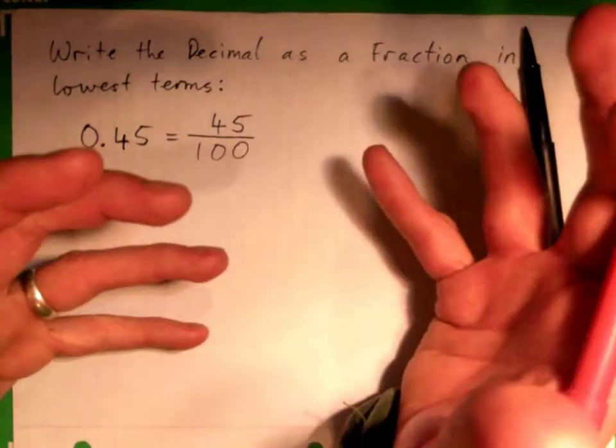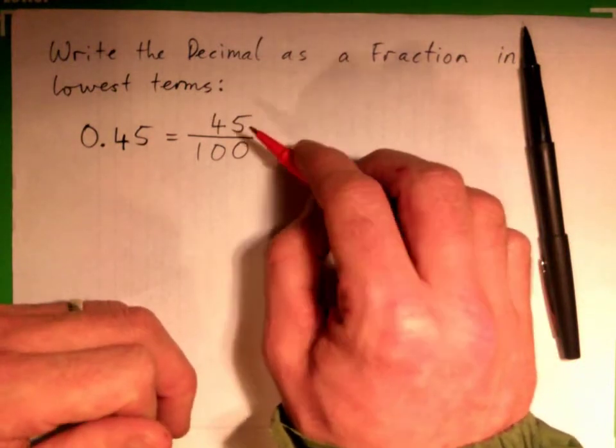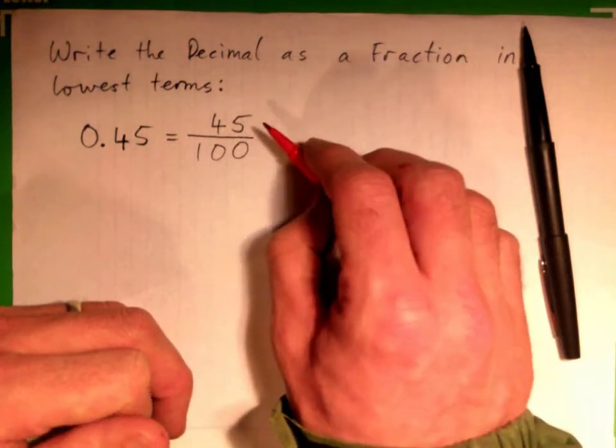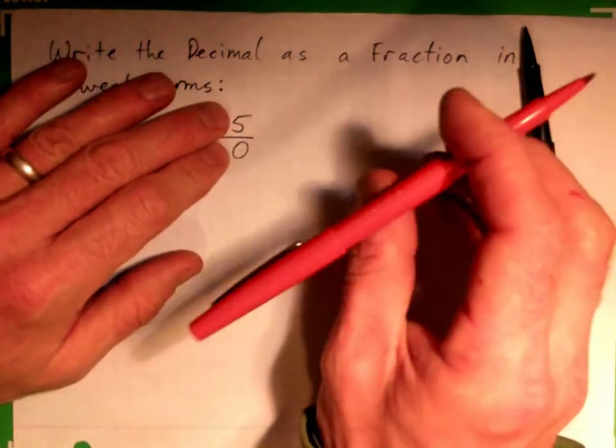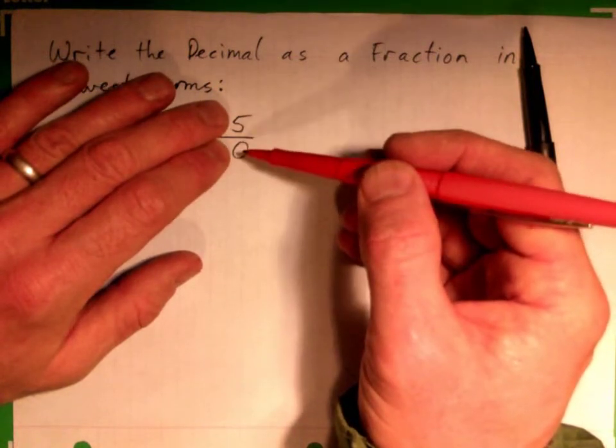Now we need to cross-cancel. And you've got to choose a number that goes into the top and also into the bottom. Now, the trick here, if you look at the last digit in each number, there's a 5 here, there's a 0 here.